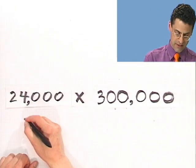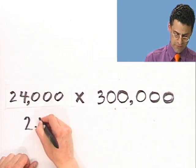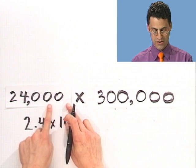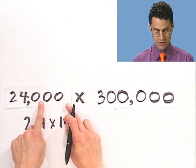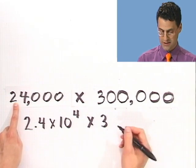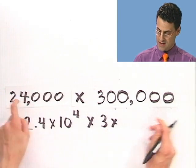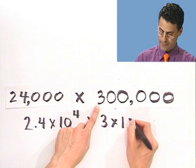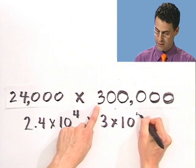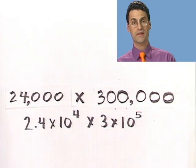What would you do? I'd write this as 2.4 times 10 to the what? Let's see, 1, 2, 3, 4. And then I multiply that by 3.0 times 10 to the what? 1, 2, 3, 4, 5.